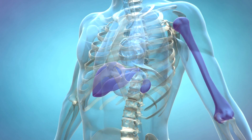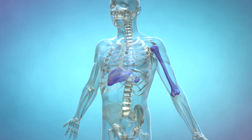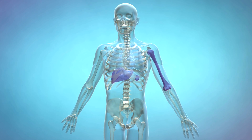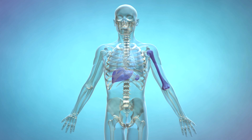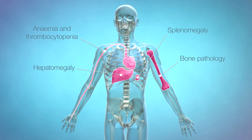Accumulation of Gaucher cells in the liver, spleen, and bone marrow gives rise to the typical clinical manifestations of Gaucher disease. Gaucher cells also secrete cytokines which can contribute to the signs and symptoms of disease.